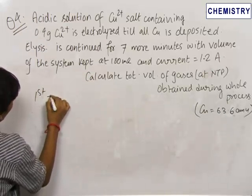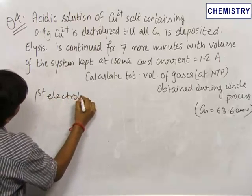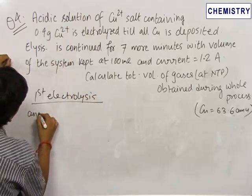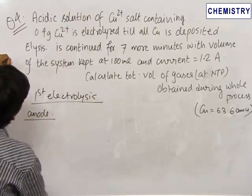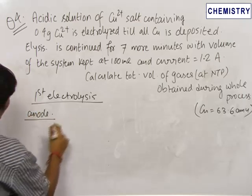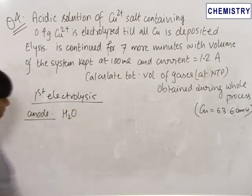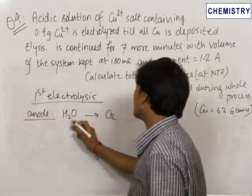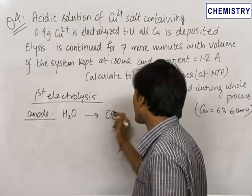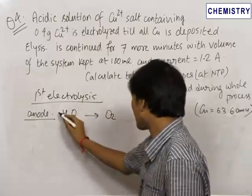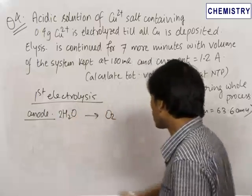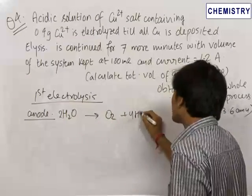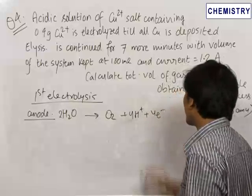In the first electrolysis, when Cu2+ ions are present, Cu2+ ions undergo reduction at the cathode. At the anode, oxidation of water takes place — water goes to oxygen gas, with the oxidation number of oxygen changing from minus 2 to 0. Balancing this reaction, we take one more molecule of water, add 4H+ on one side, and add 4 electrons: 2H2O → O2 + 4H+ + 4e−.